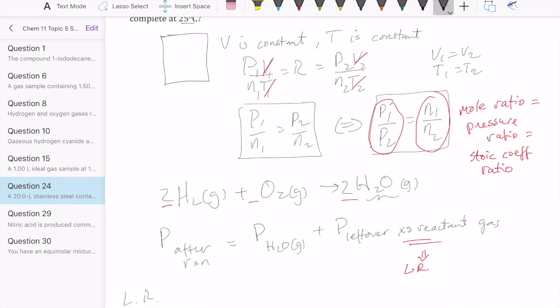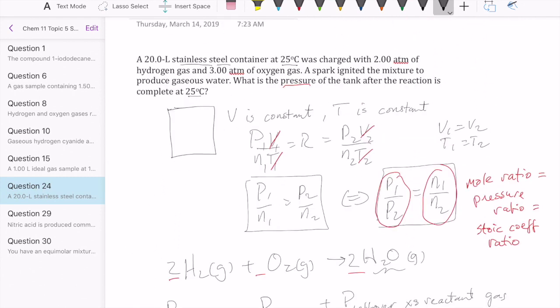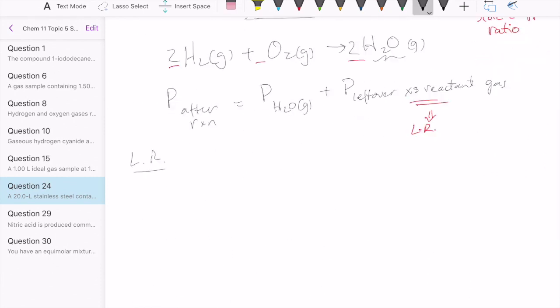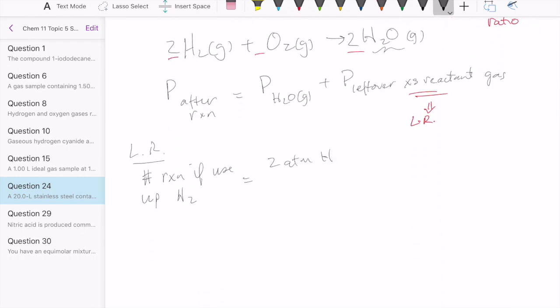Well, because the coefficient represents not only number of moles, but also pressure, we can also just take the pressure that's given for each of the gases and divide it by the coefficient. So let's do it. Let's calculate the number of reaction if we use up H2. We have two atm of H2 and in the equation we're going to use two atm H2 per reaction. So that cancels giving us one reaction. So that's if we use up all H2.